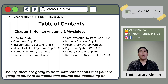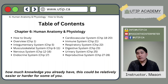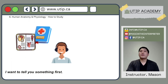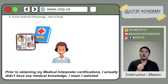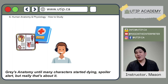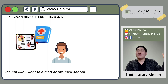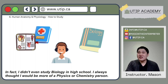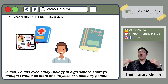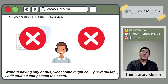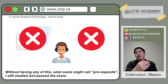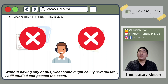There are going to be 11 different lessons that you are going to study to complete this course, and depending on how much knowledge you already have, this could be relatively easier or harder for some of you. Prior to obtaining my medical interpreter certification, I actually didn't have any medical knowledge. I watched Grey's Anatomy until many characters started dying — spoiler alert — but that's about it. It's not like I went to med or pre-med school. I didn't even study biology in high school. Without having any of these prerequisites, I still studied and passed the exam.